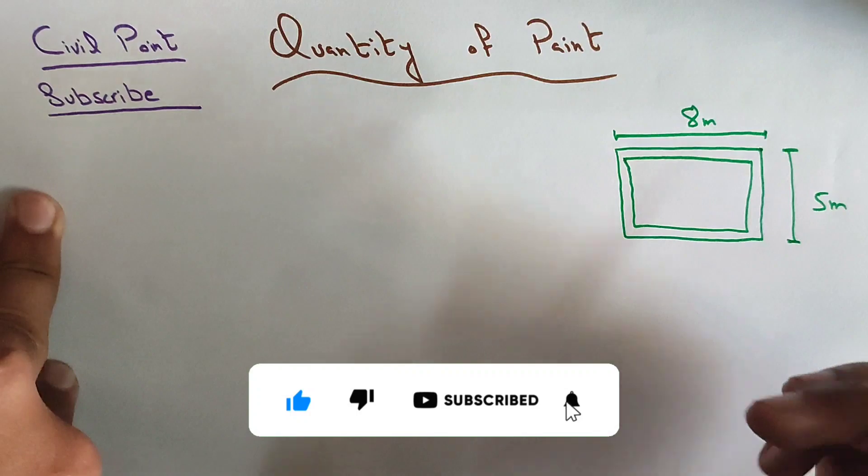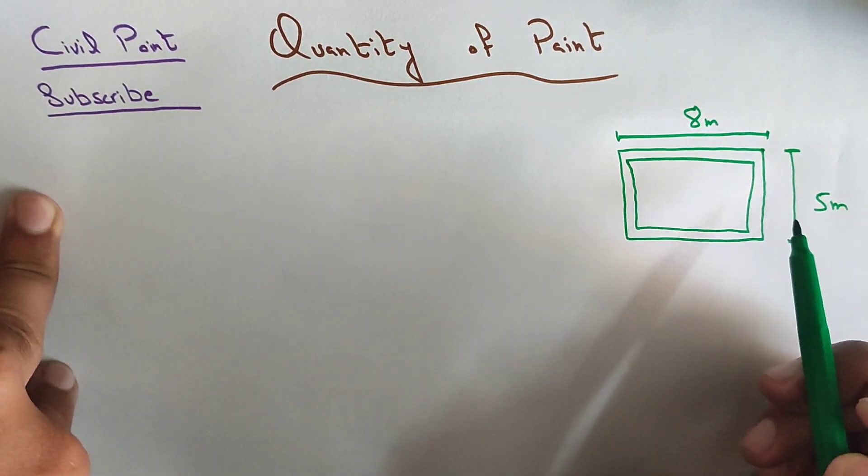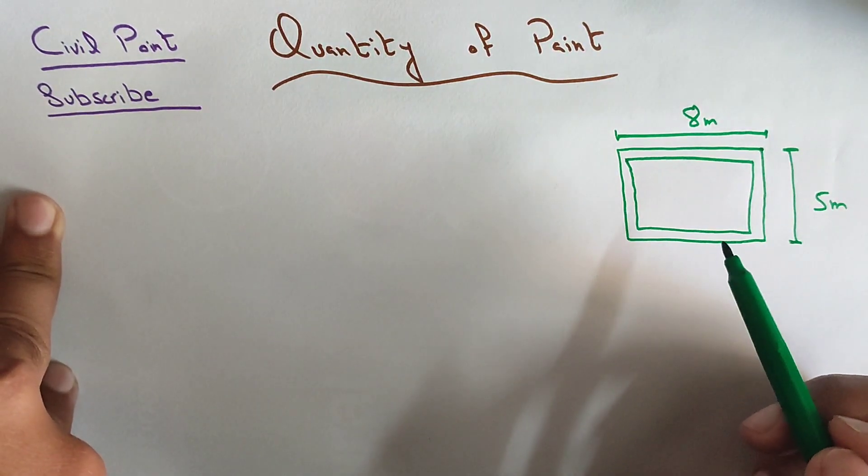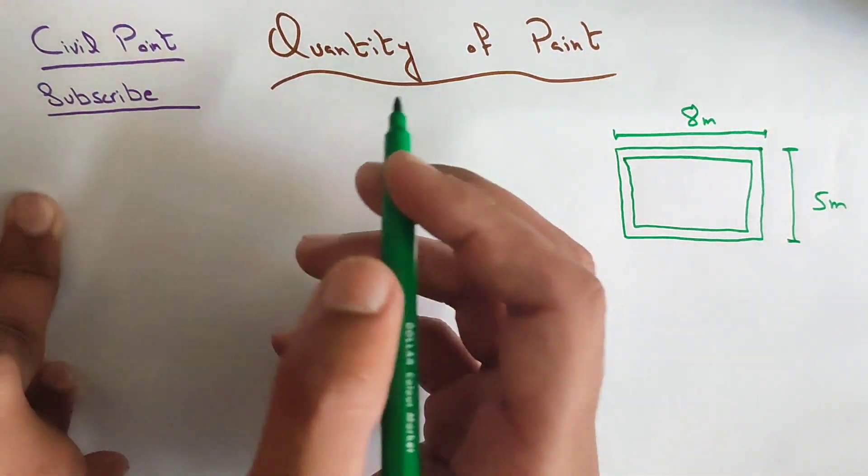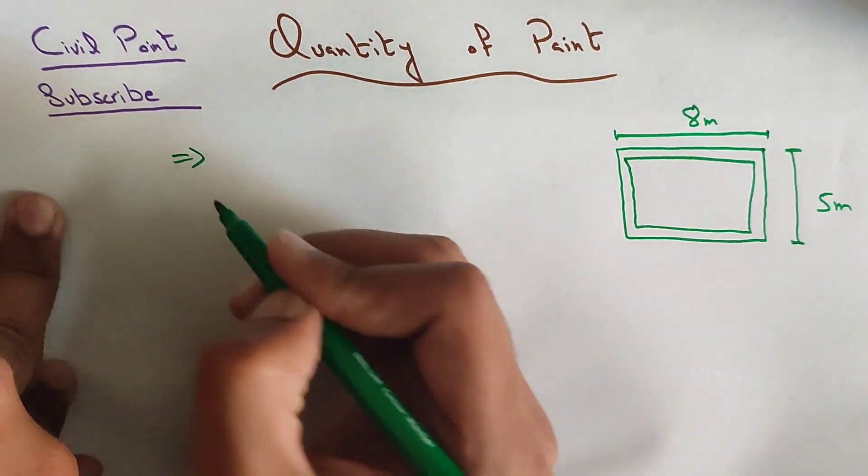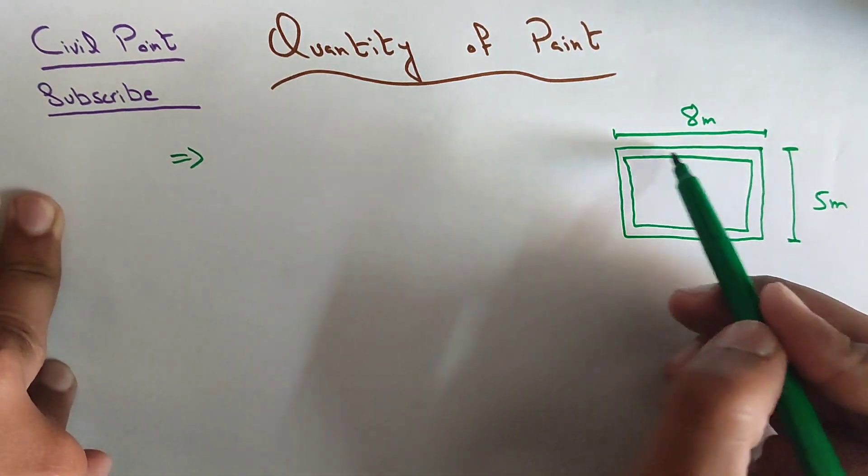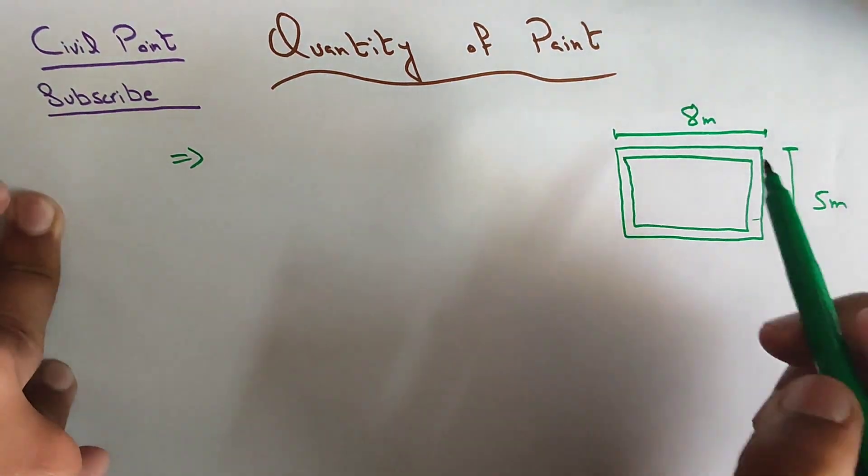Let's suppose we have a room of 8 meters by 5 meters, a rectangular room. We will calculate quantity of paint in two to three simple steps. First of all, we will measure the length of all the walls. If these are the four walls of one room, we will measure the total length of them.